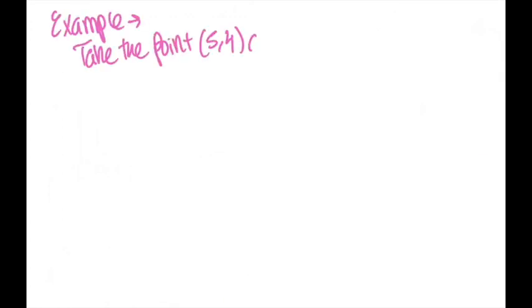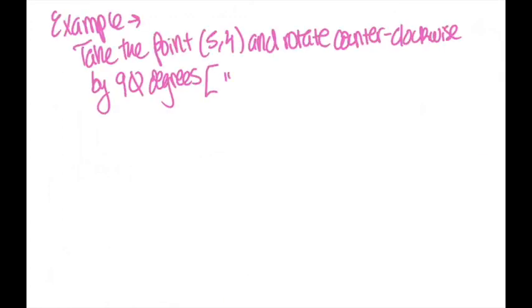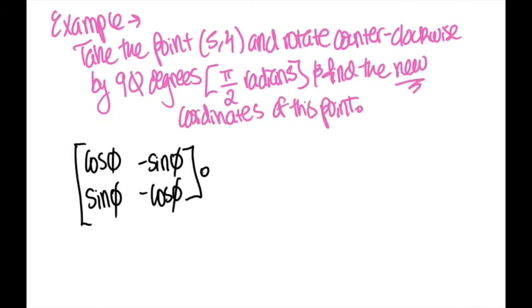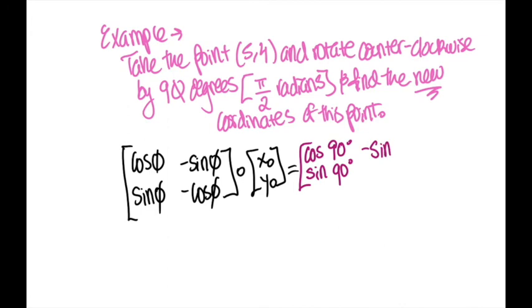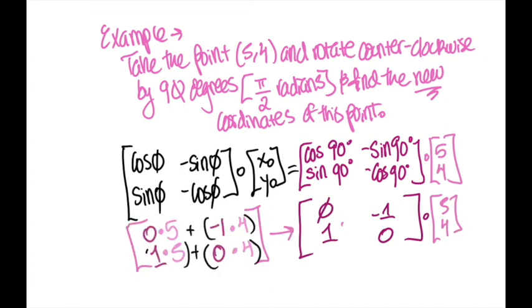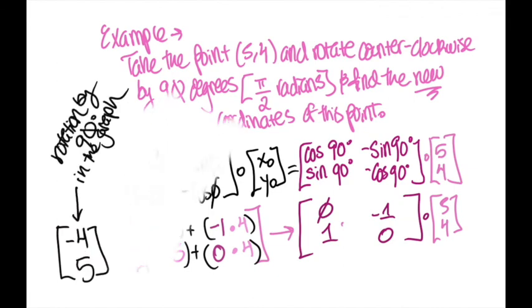Now let's do an example, doing an operation with rotational matrices. Take the point phi and rotate it counterclockwise by 90 degrees, or pi over 2 radians, and find the new coordinates of this point. To solve this equation, we would substitute in 90 degrees for the variable phi, and multiply that matrix by the coordinates given to us in the problem. The product gives us the new coordinates after rotation.